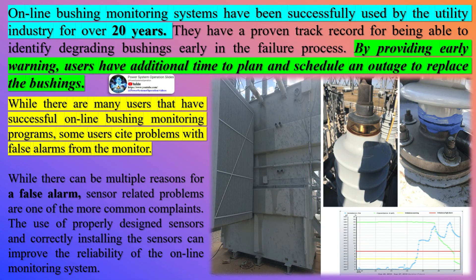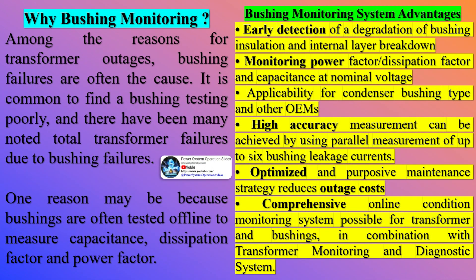It's worth noting that the maintenance cycles of large power transformers have been extending from 1 to 2 years to 7 years, and in some instances to 12 years. Ultimately, the frequency of monitoring will depend on the specific requirements of your transformer system, the type of bushings used, and the environmental conditions. It's always best to consult with a professional or follow the manufacturer's guidelines for specific recommendations.